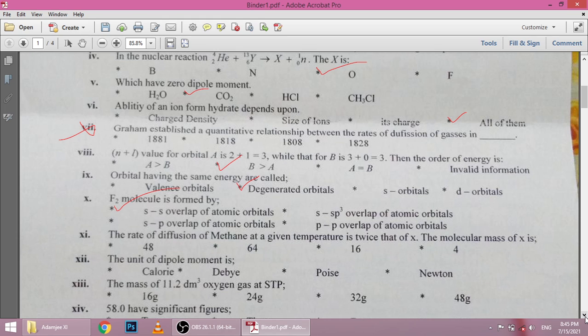The rate of diffusion of methane at a given temperature is twice that of X. The molecular mass of X is dash. The rate of methane is double, it's twice that of X. So methane is 16, the mass of methane is 8. It is also not a correct MCQ.